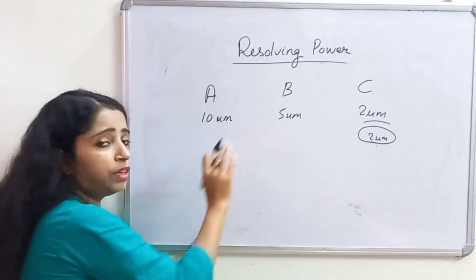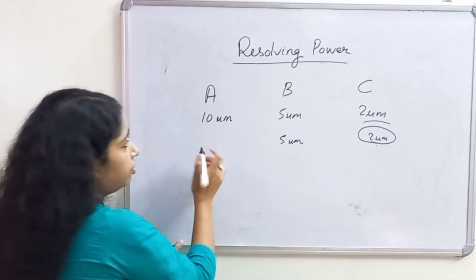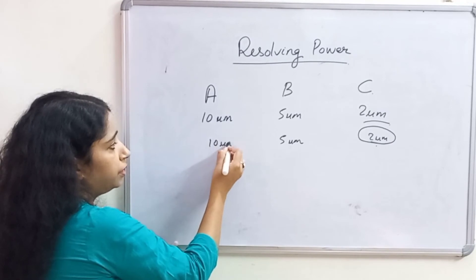But B can resolve only if they are at least 5 micrometer away. And A can resolve only if they are 10 micrometer away.